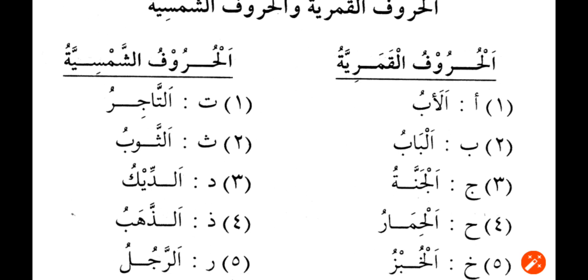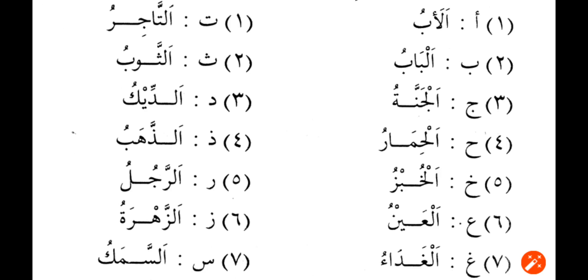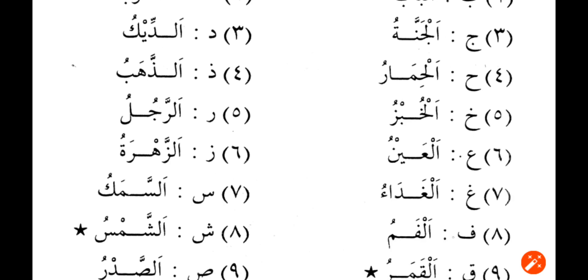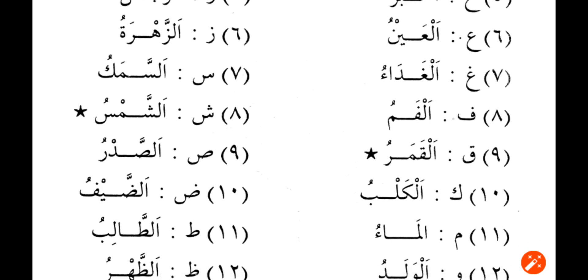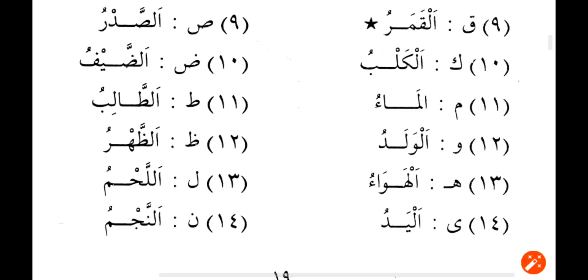Al-Abu means Father. Al-Babu means Door. Al-Jannatu means Garden or Paradise. Al-Himar means Donkey. Al-Khubz means Bread. Al-Ainu means Eye, or you can say Fountain. Al-Gadha means Food or Lunch. Al-Famu means Mouth. Al-Kamaru means Moon. Al-Kalb means Dog. Al-Ma means Water. Al-Walad means Boy. Al-Hawa means Air. Al-Yad means Hand.